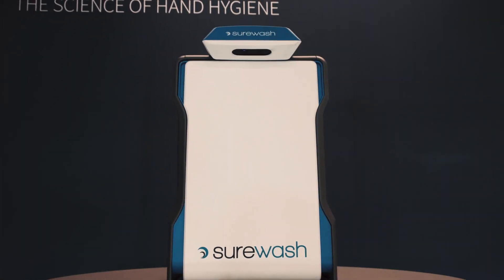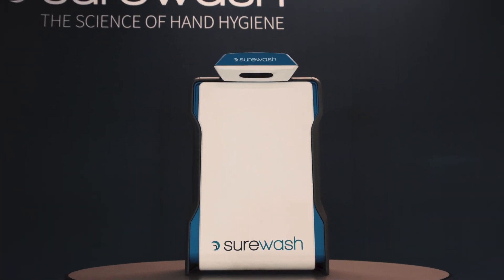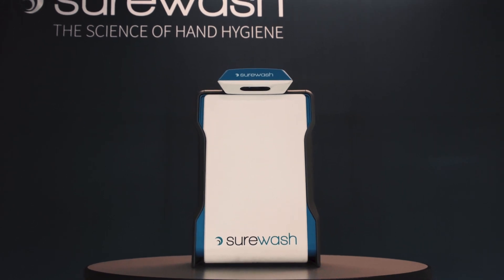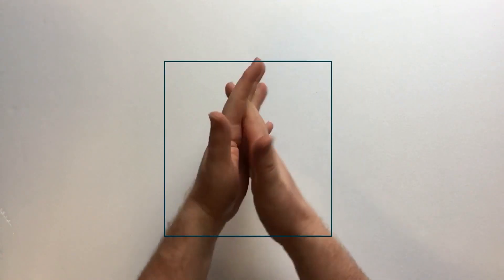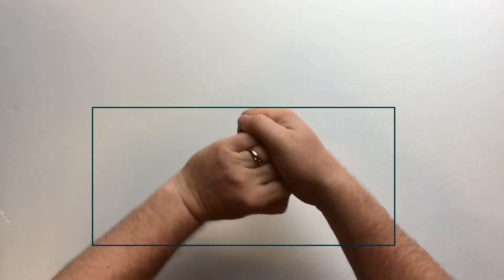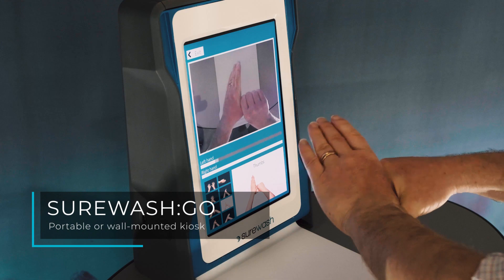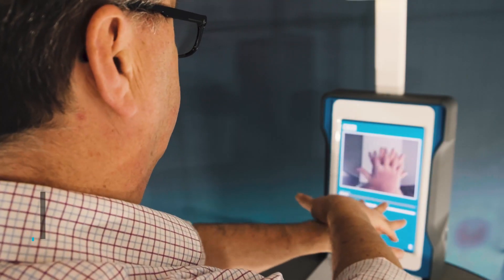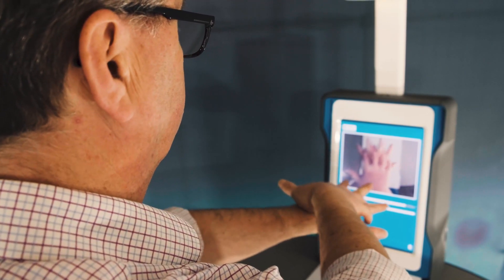To address this learning challenge, a new type of hand hygiene training device has been developed. SureWash uses a camera to measure the learner's hand hygiene technique and gives real-time feedback. This repeated practice builds the muscle memory of good hand hygiene, making it easier to remember during patient care.